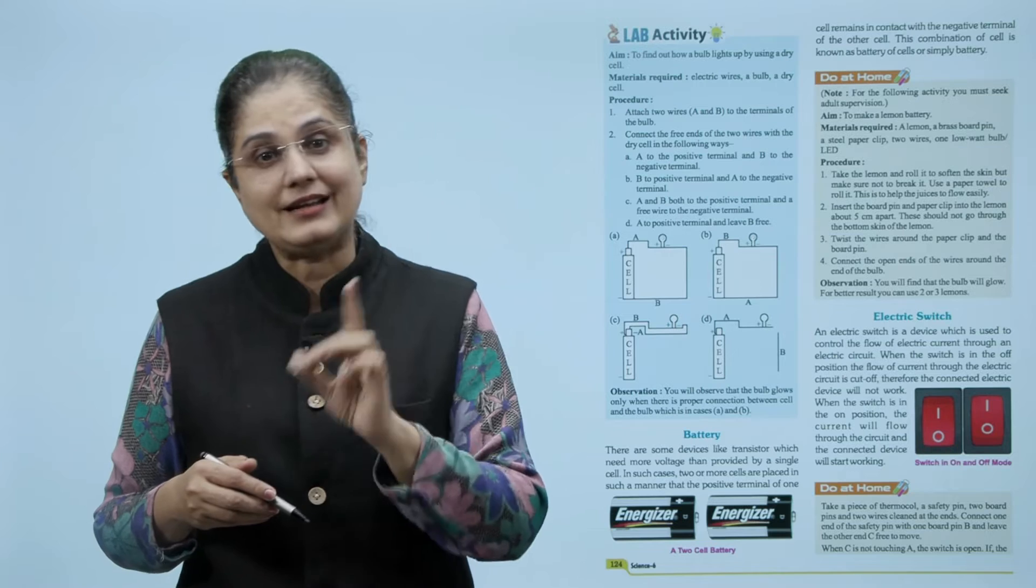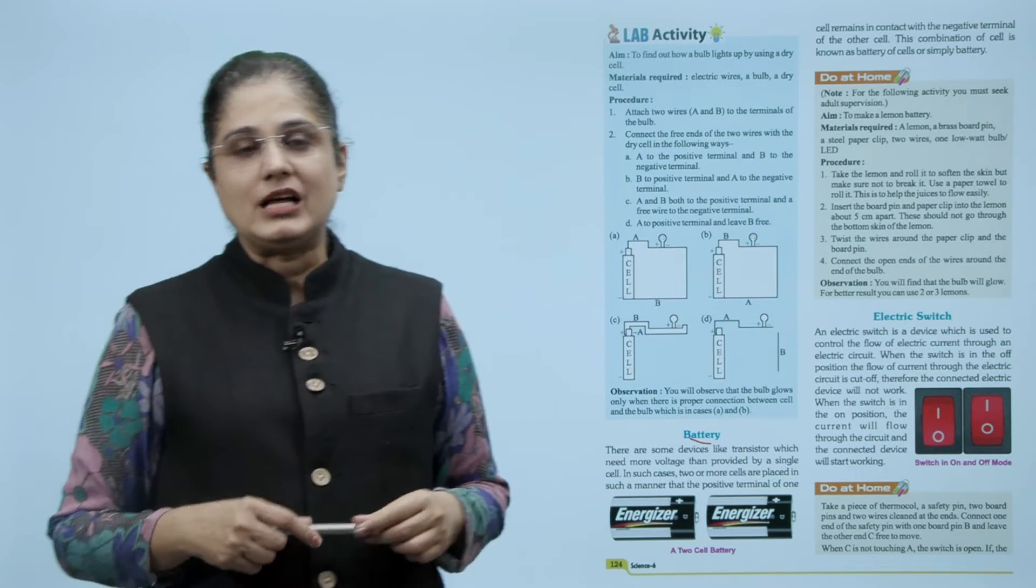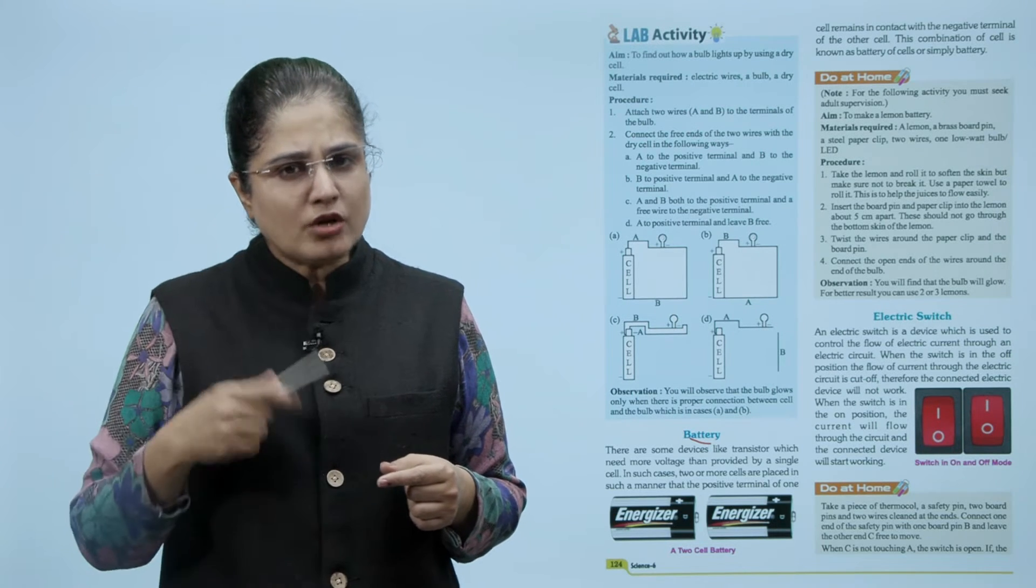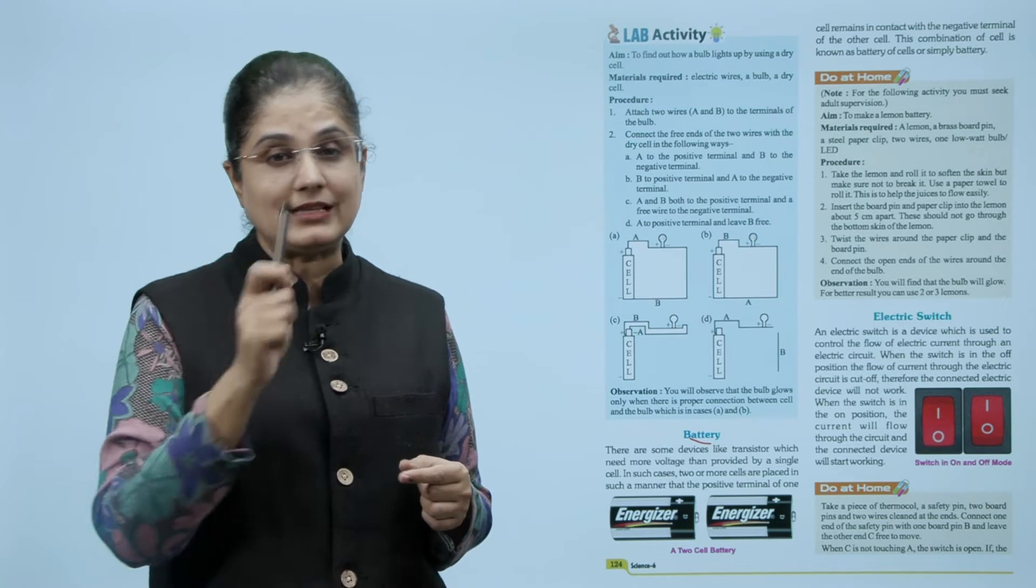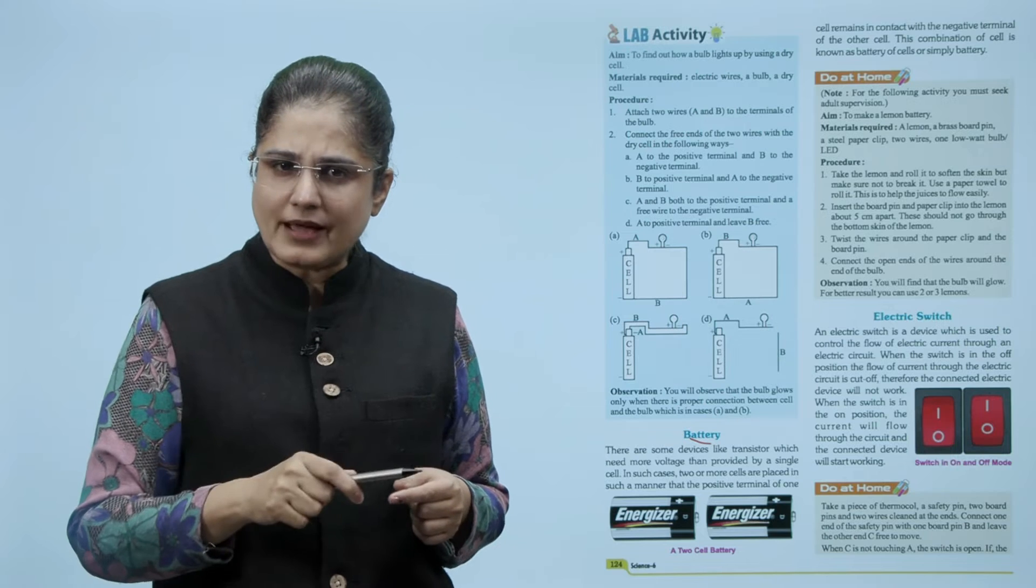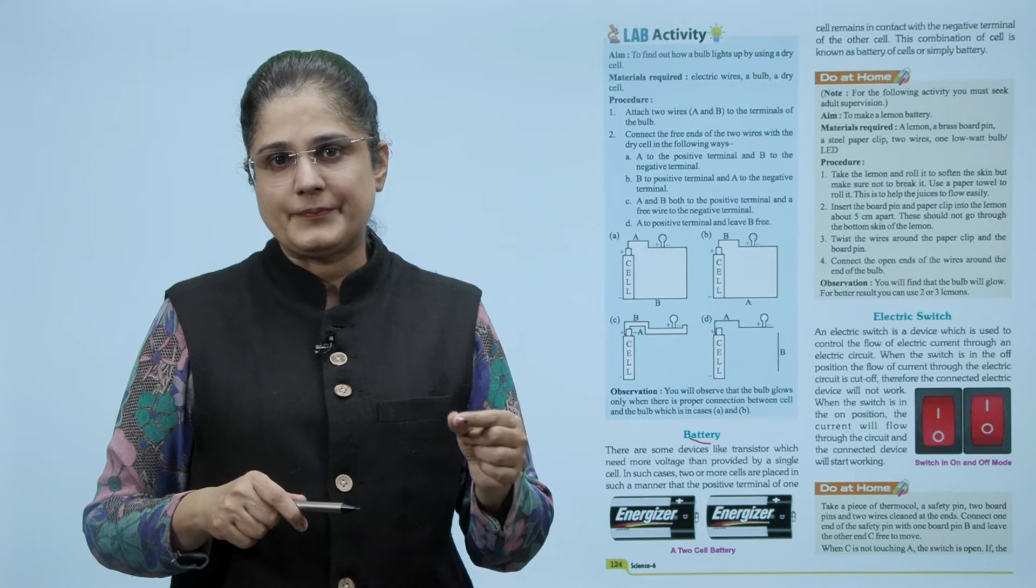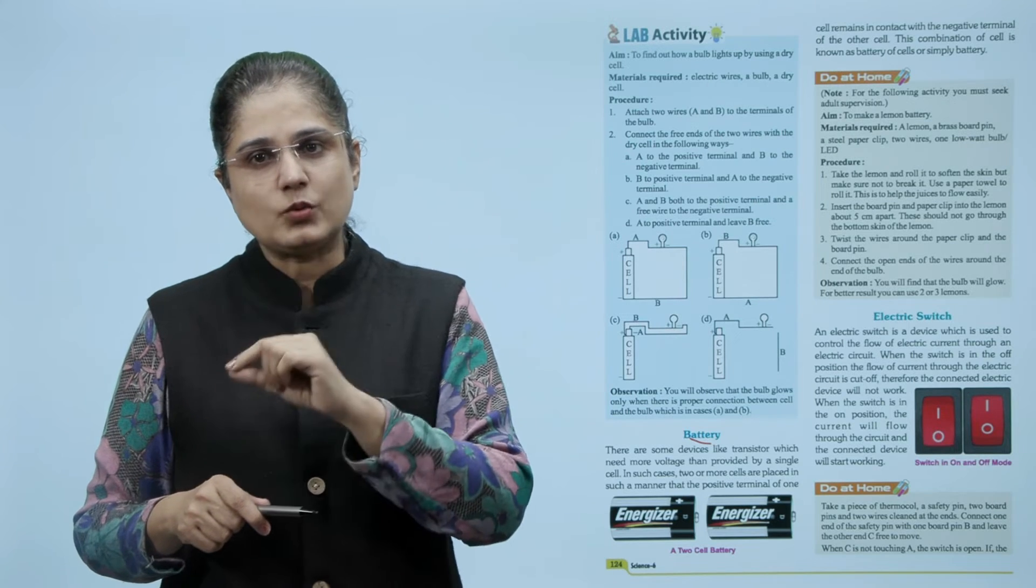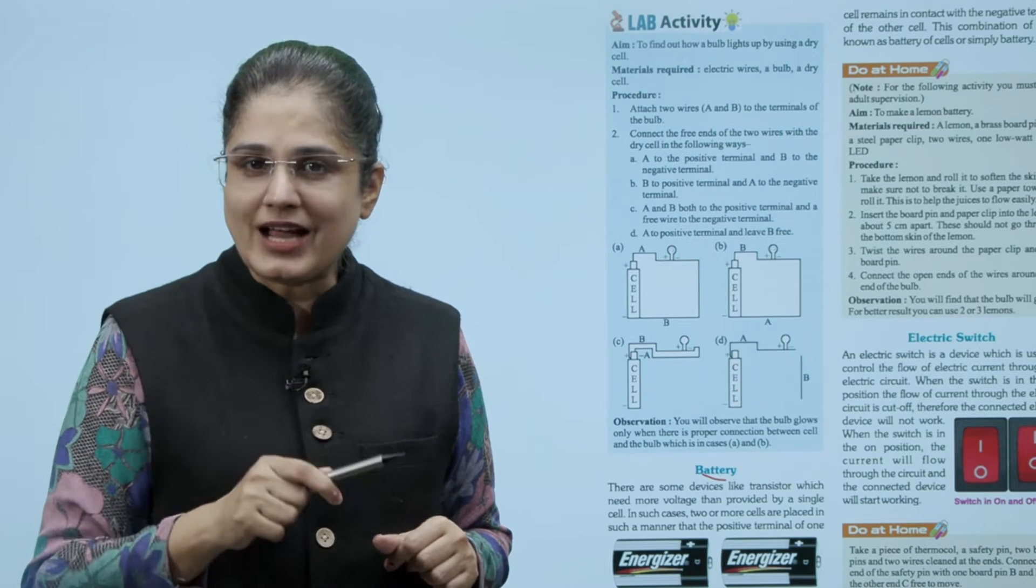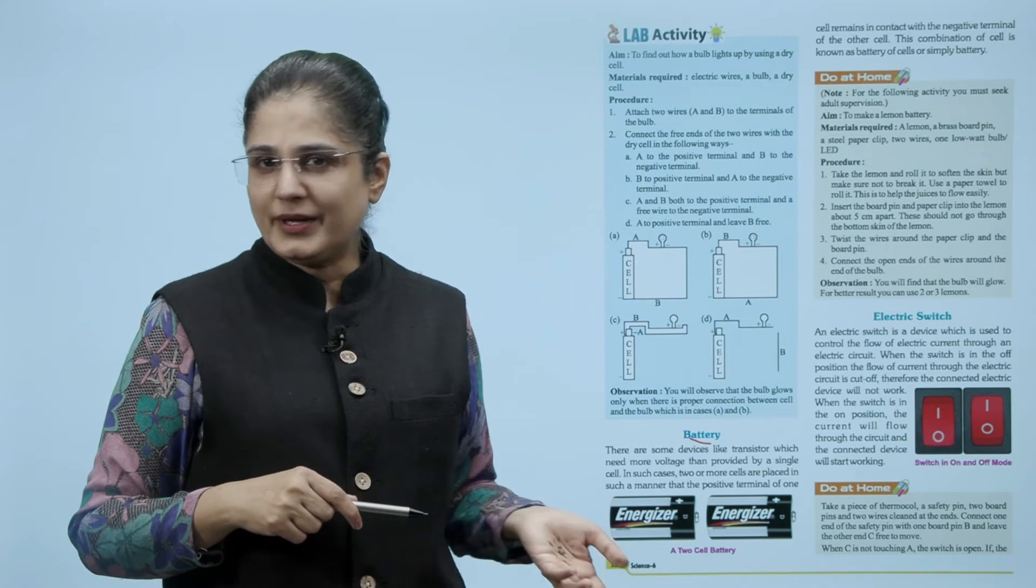So let us now look at a battery. There are some devices like transistor which need more voltage than provided by a single cell. In such cases two or more cells are placed in such a manner that the positive terminal of one cell remains in contact with the negative terminal of the other cell. This combination of cell is known as battery of cells or simply battery.